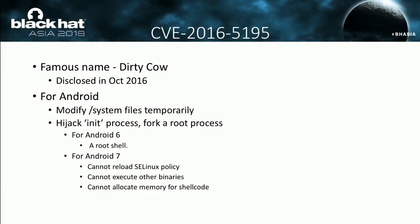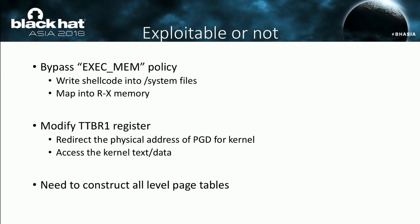For Android 6, this root process can spawn a root shell. However for Android 7 the rules have changed — SELinux policies prohibit an init process from reloading policies, so you can't defeat SELinux. Without a domain transition, this root process can't execute other binaries. And the process can't allocate RWX memory for shellcode due to the exact memory policy. So the first problem is bypassing the exact memory policy. Since files in the system partition can be modified by Dirty COW, the bypassing steps are: first write the shellcode into a binary of a certain system partition like ping, and map the file into RX memory.